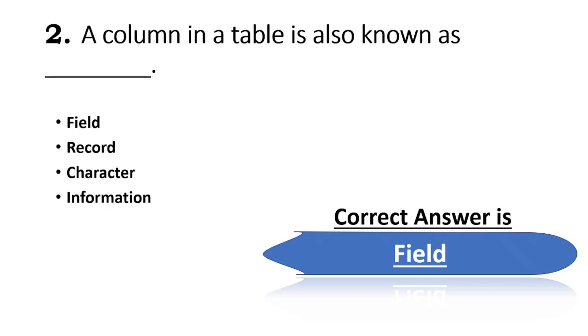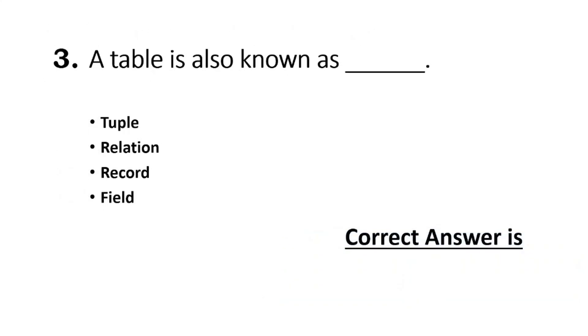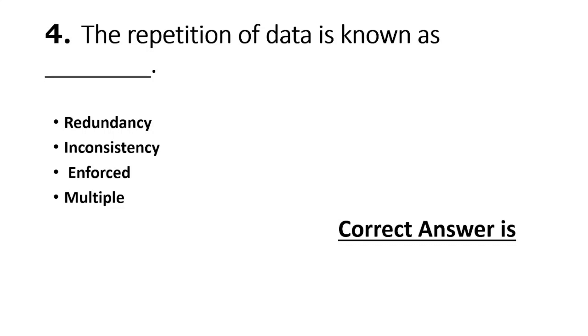Question 3: A table is also known as - the options are tuple, relation, record, field. Table is also known as relation.